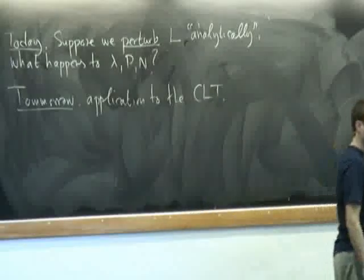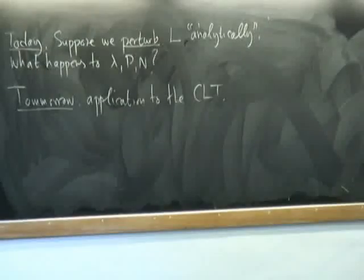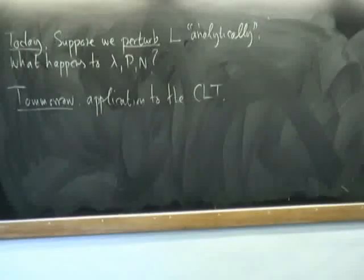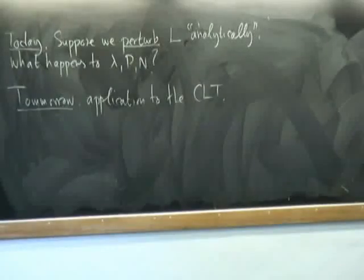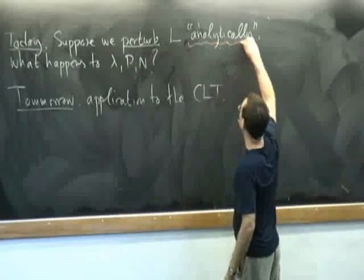What we are going to do today is we are not going to do any dynamics — we are going to do a little bit of functional analysis. We are going to take an operator which has a spectral gap, assume that it sits in an analytic complex one-parameter family of operators, and show that for small values of the parameter the perturbed operators will continue to have a spectral gap, and the eigenvalue lambda, the projection P, and the error term N vary in an analytic way. To say this precisely, we need to understand what it means to move in an analytic way in the space of operators.